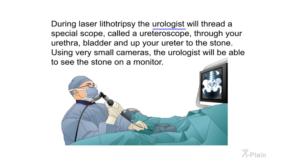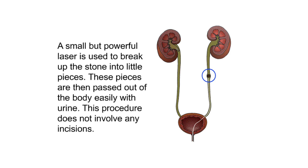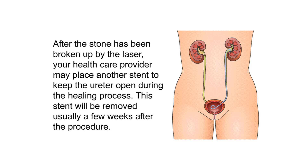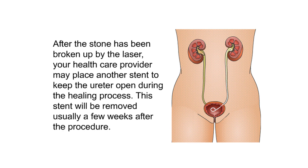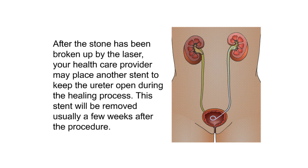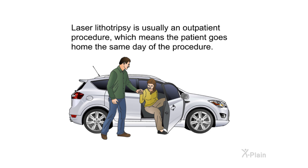During laser lithotripsy, the urologist will thread a special scope called a ureteroscope through your urethra, bladder, and up your ureter to the stone. Using very small cameras, the urologist will be able to see the stone on a monitor. A small but powerful laser is used to break up the stone into little pieces. These pieces are then passed out of the body easily with urine. This procedure does not involve any incisions. After the stone has been broken up, your health care provider may place another stent to keep the ureter open during the healing process.